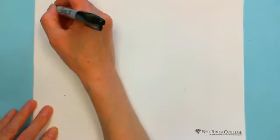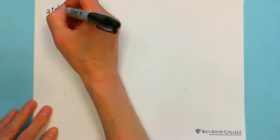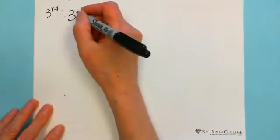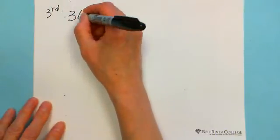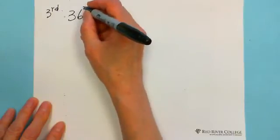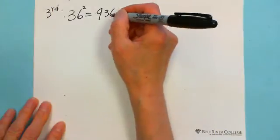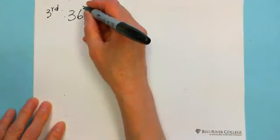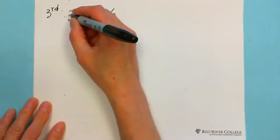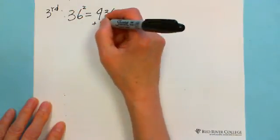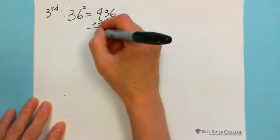Let's practice some questions. For example, 36 squared. Square 3 is 9. Square 6 is 36. Then multiply: 2 times 3 times 6 is 36. Combining with carries: the result is 1296.